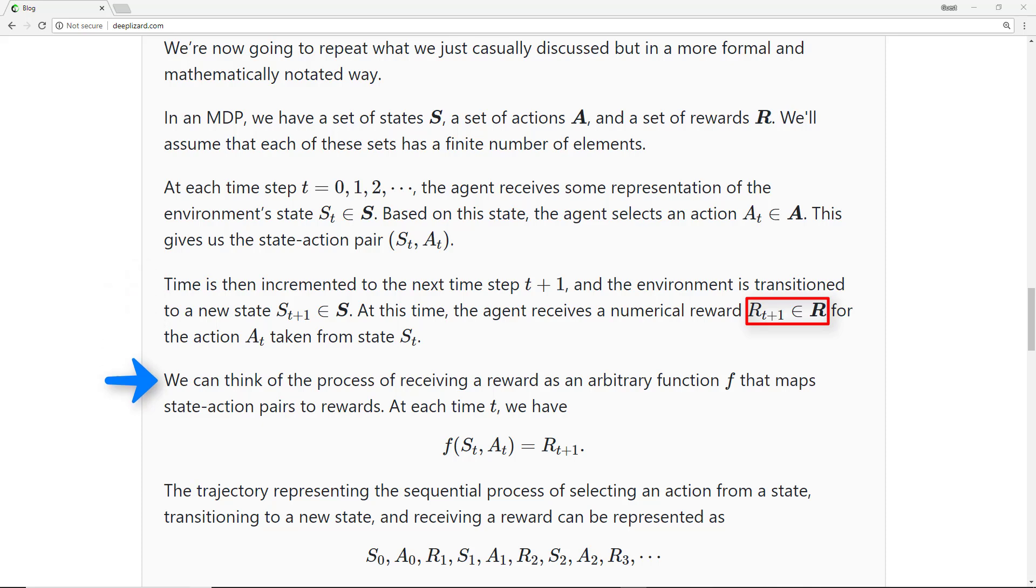So generally, we can kind of think of this process of receiving a reward as an arbitrary function that maps state-action pairs to rewards. The trajectory representing the sequential process of selecting an action from a state and then transitioning to a new state and receiving a reward can be represented like this.